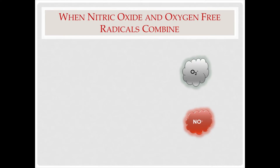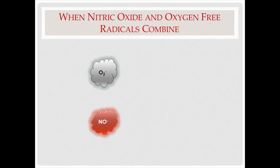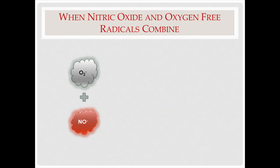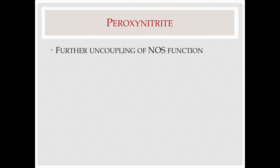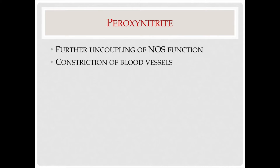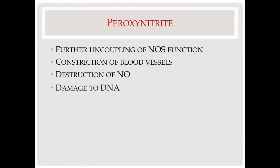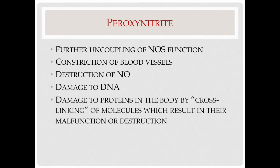The production of nitric oxide and oxygen-free radicals together create an especially dangerous situation, because these two molecules will combine to form a nasty entity called peroxynitrite. Peroxynitrite is an extremely dangerous free radical. It can cause further uncoupling of NOS function, constriction of blood vessels, further destruction of nitric oxide, damage to DNA, and damage to proteins in the body by a process called cross-linking.